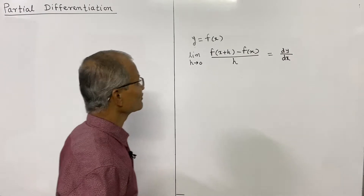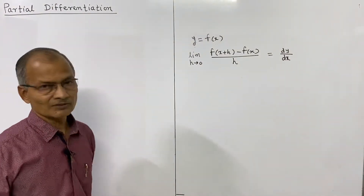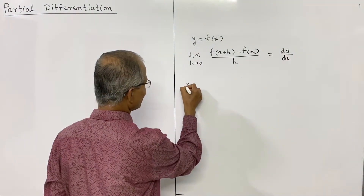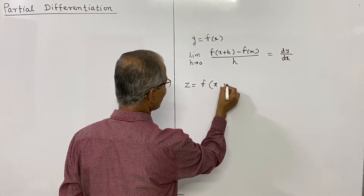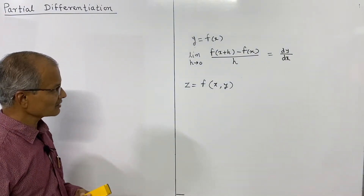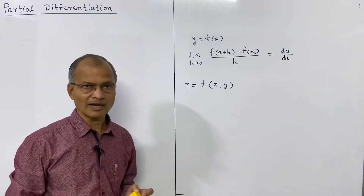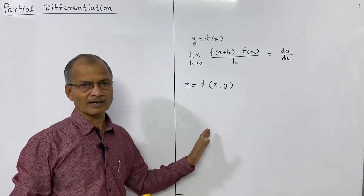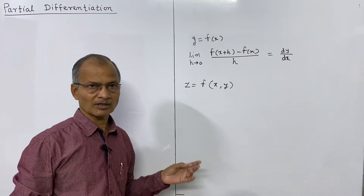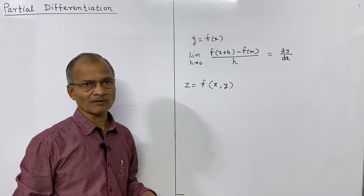This is the usual definition of the derivative we have studied earlier. Now, y here is a function of a single variable, but there are many functions which are functions of multiple variables — that means functions of more than one variable. For example, if z is a function of x and y, then it is a function of two variables. Examples of multivariate functions can be considered — suppose the production of a crop in agriculture depends on many factors, and therefore it becomes a function of multiple variables.